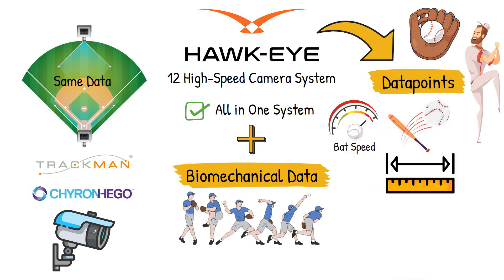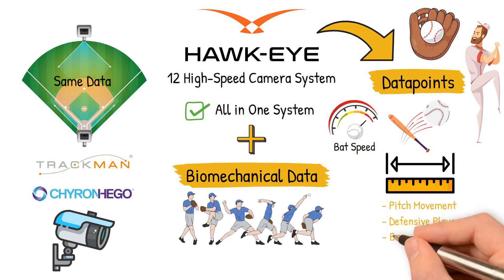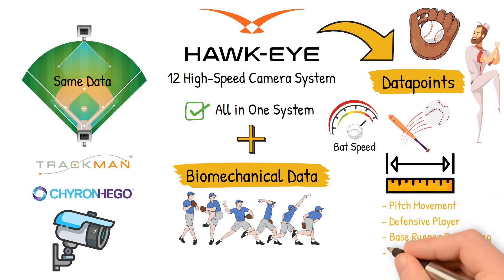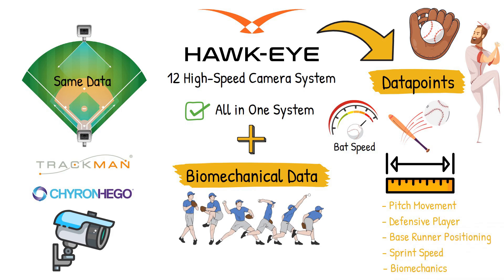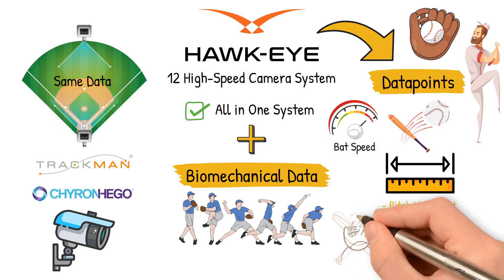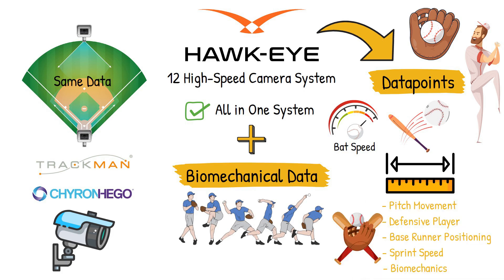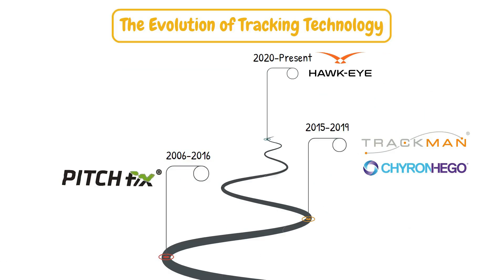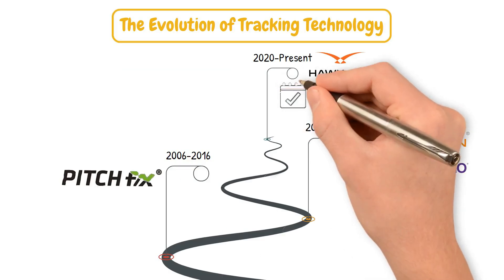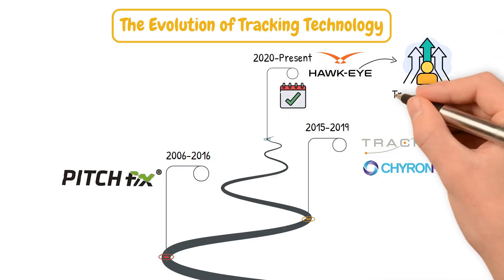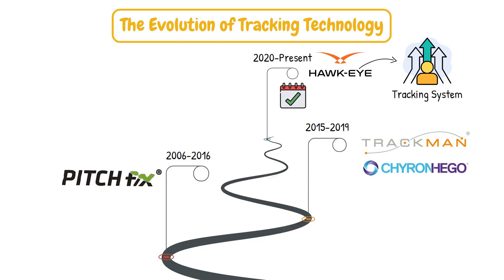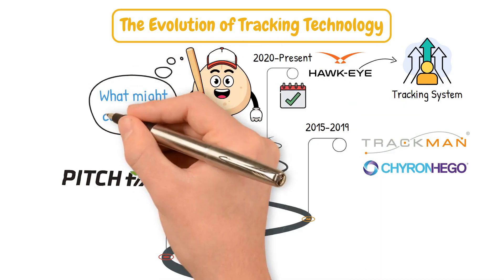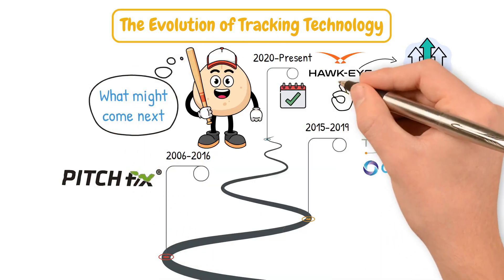We can see the exact plane of the bat as it goes through the zone, and also get a better measure of in-game bat speed. This new system is pretty legit — it measures pitch movement, defensive player and base runner positioning, sprint speed, and even biomechanics. Using Hawkeye has unlocked a new wave of information that we never had access to before, and there is still a ton to learn. The StatCast system is now powered by Hawkeye, the most advanced tracking system baseball has ever seen.